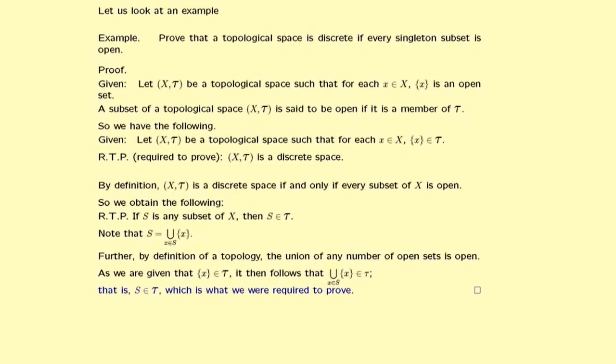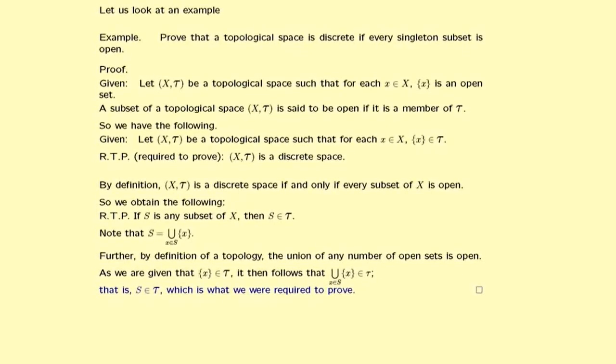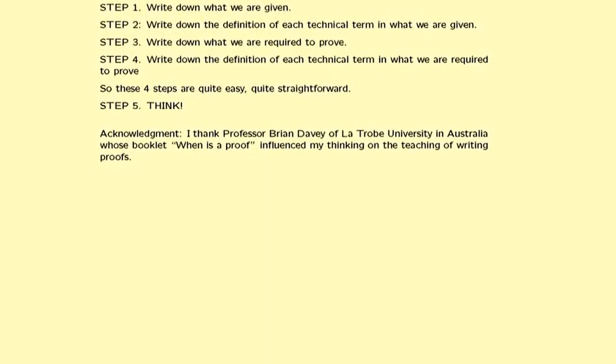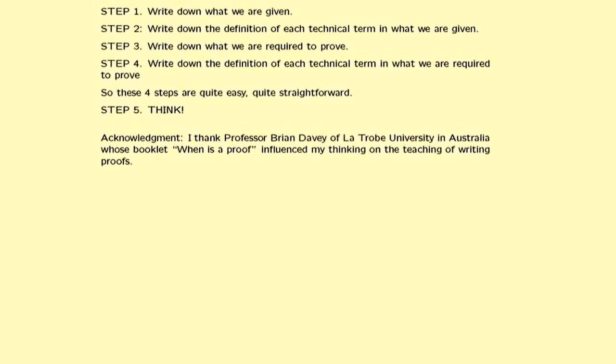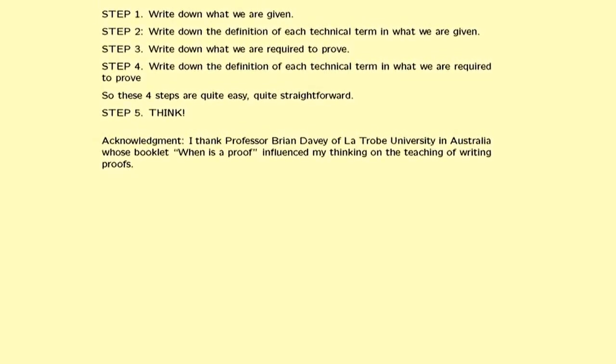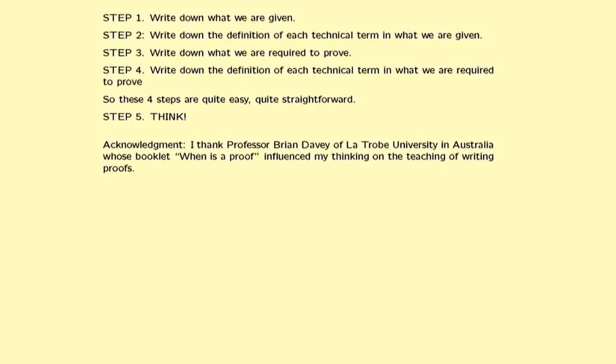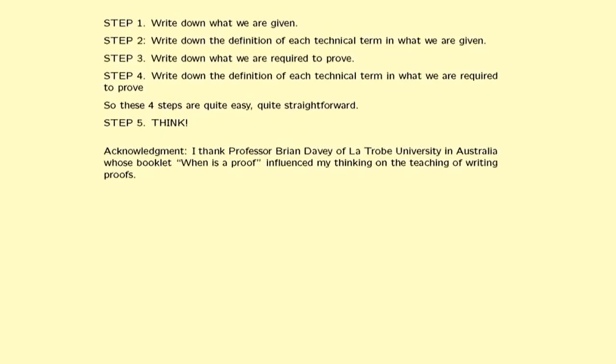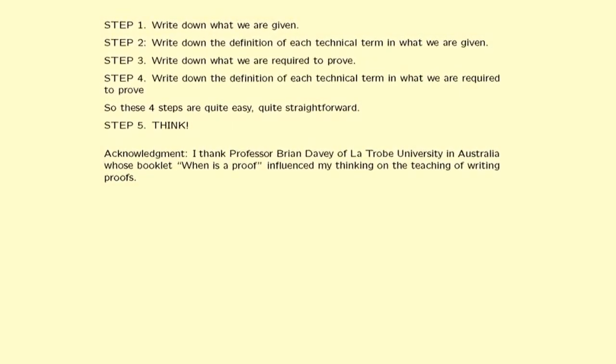So that is how you use the steps to get a proof. In conclusion, we see that steps one to four are easy, so there is no reason for you ever to say you cannot start a proof. Step five is to think. I have been influenced by Professor Brian Davey of La Trobe University in Melbourne, Australia, who produced a booklet called When is a Proof a Proof.